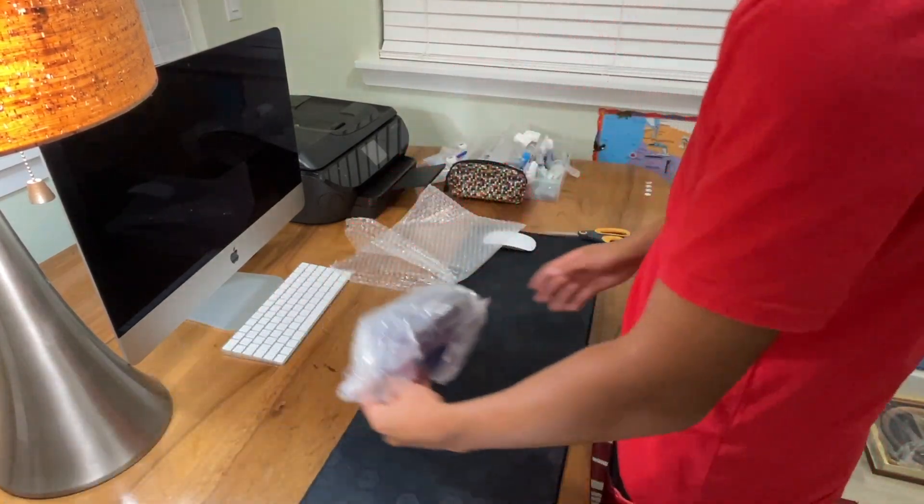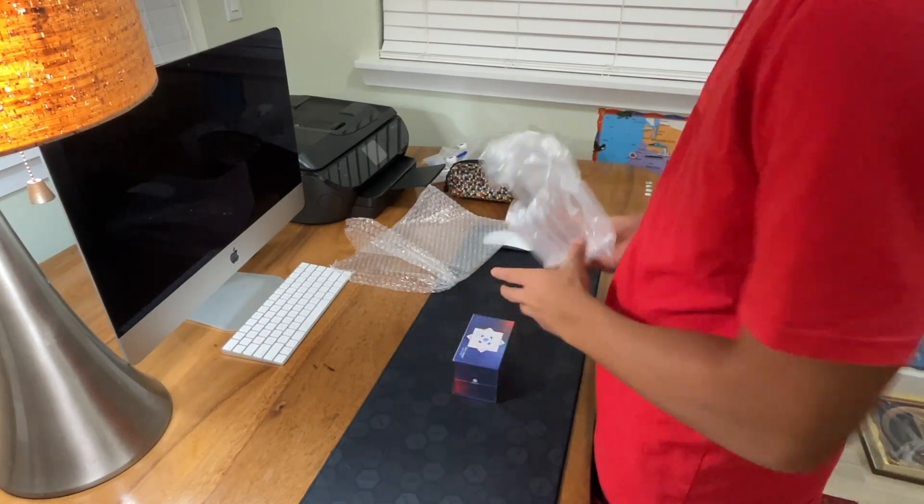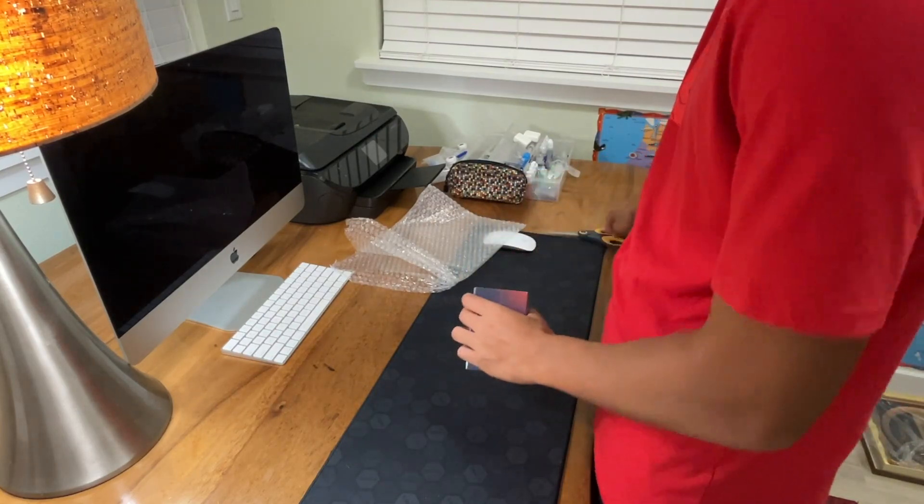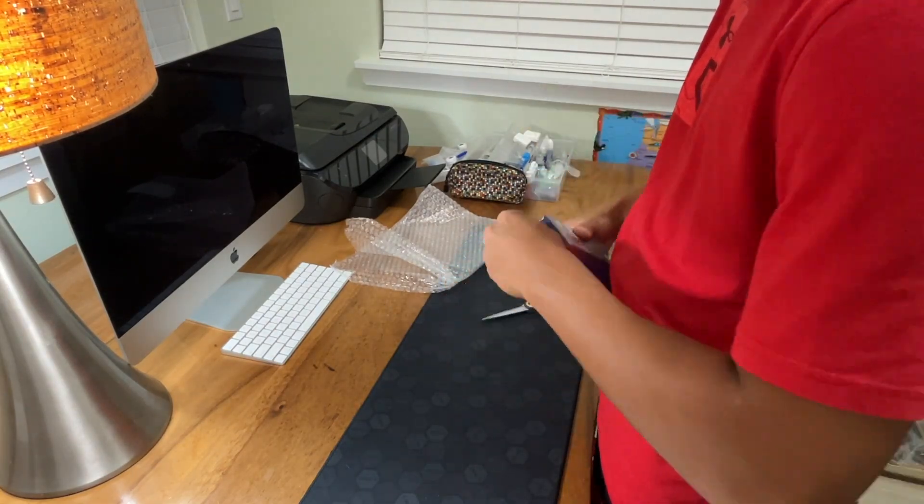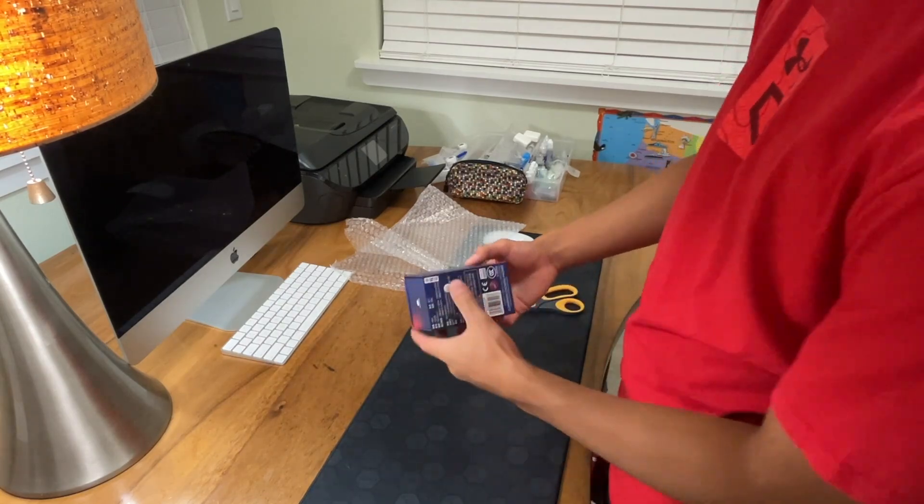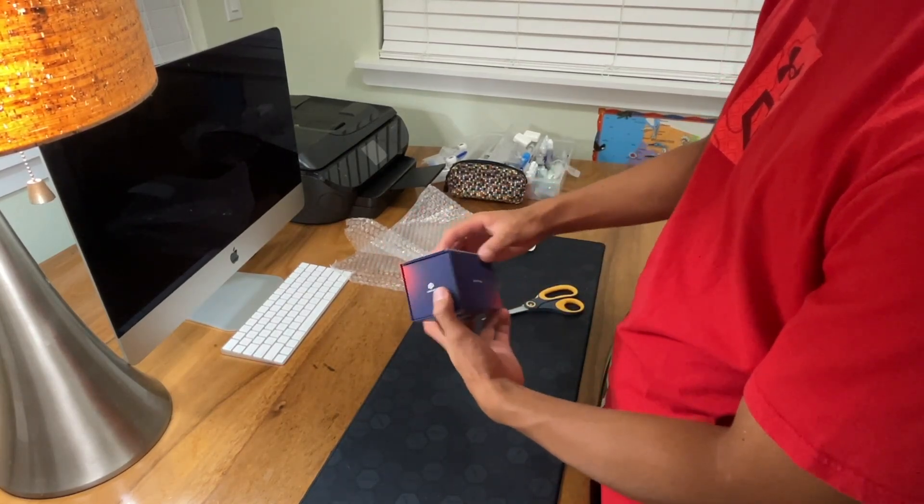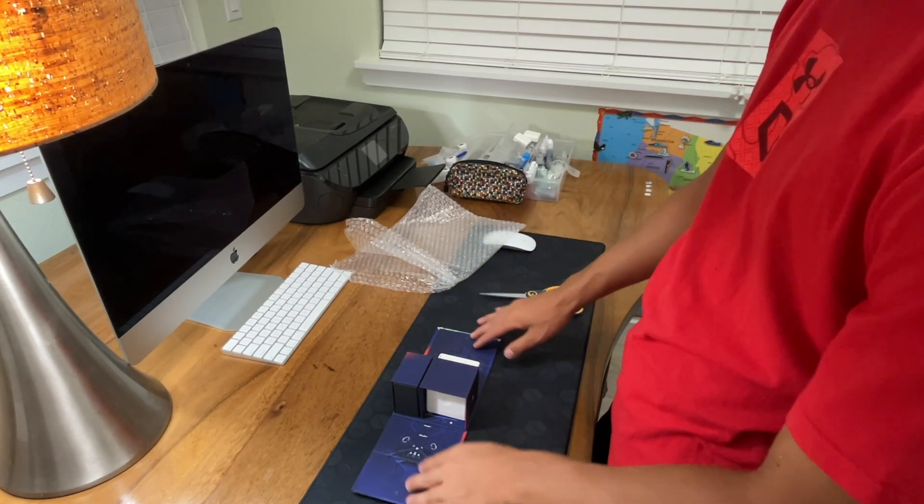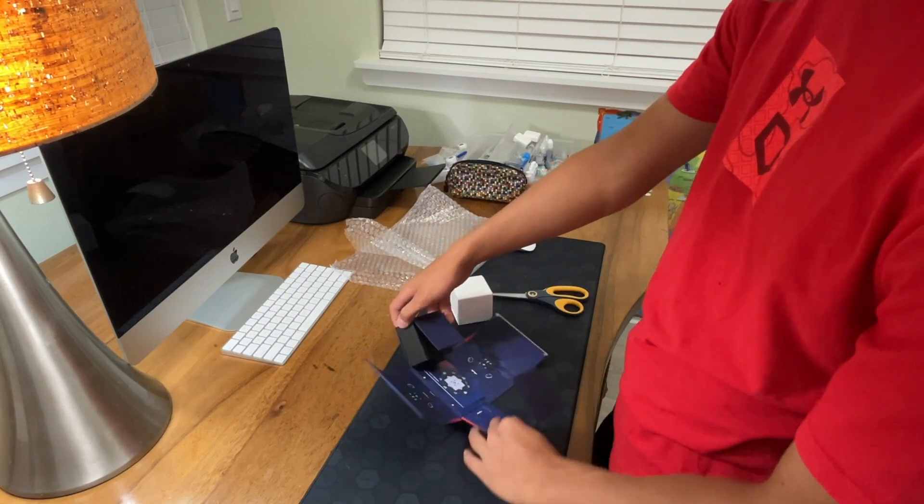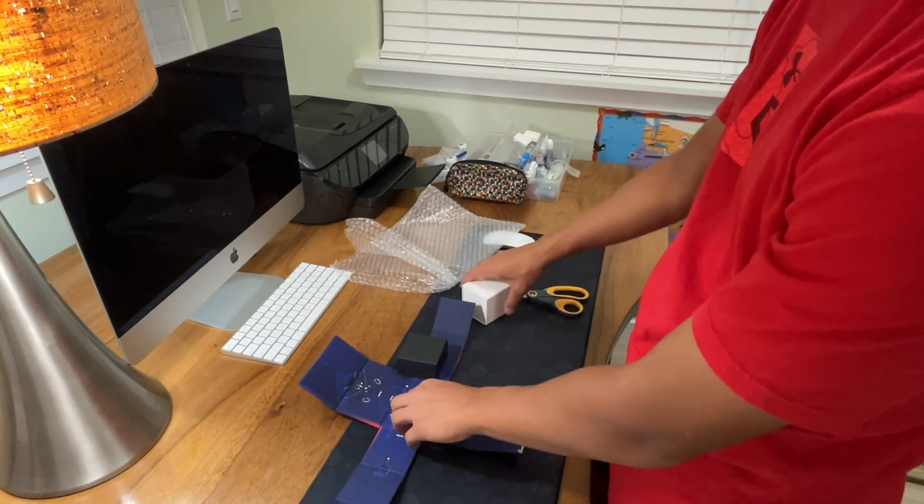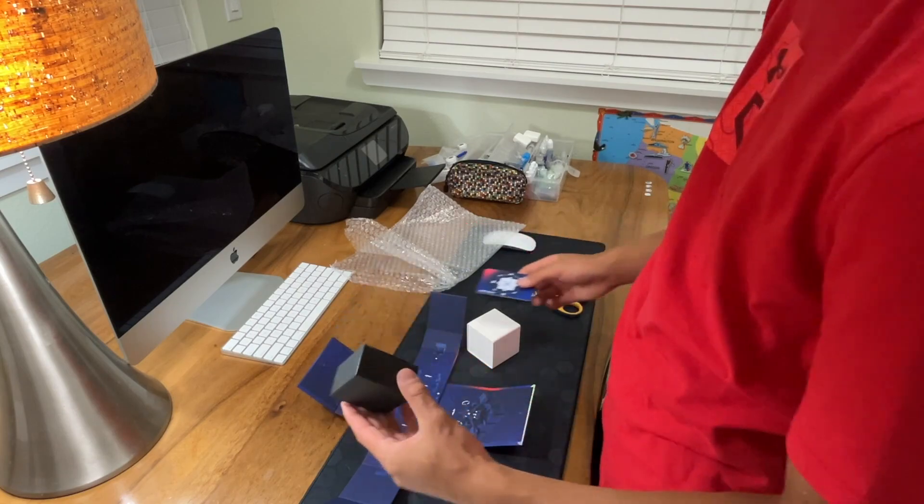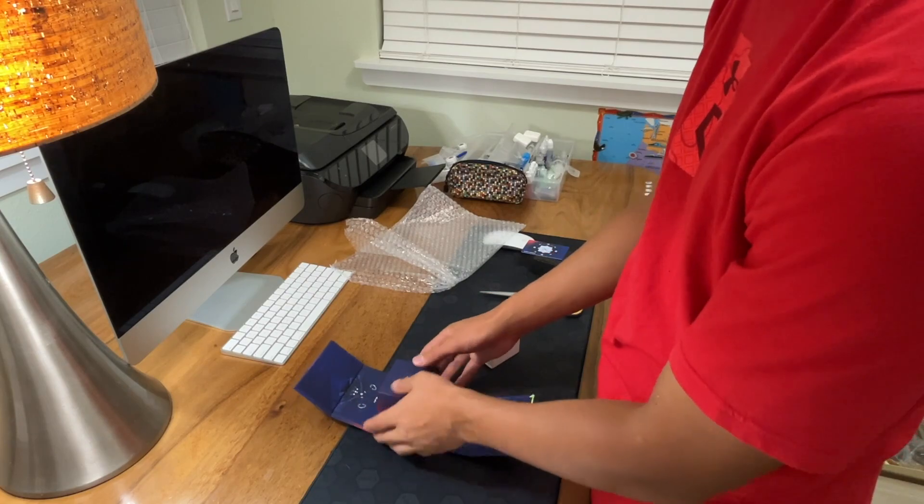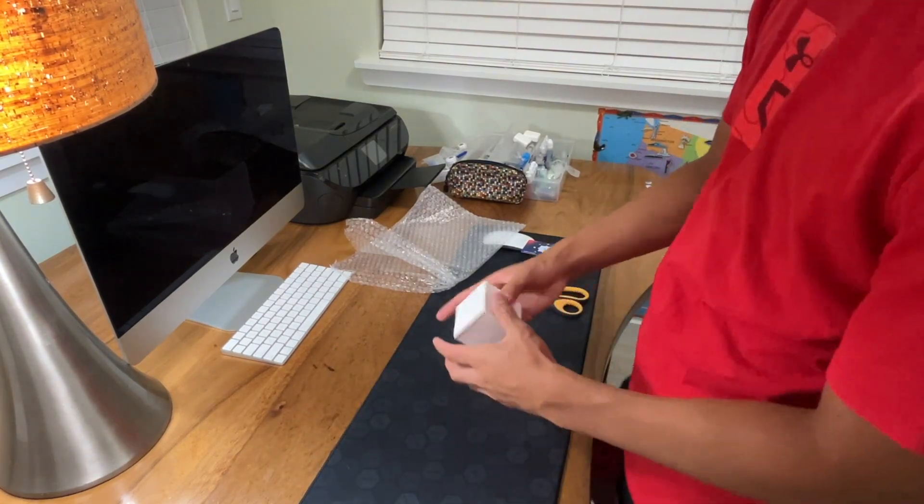Alright, so now the main event, the GAN 13. Very nice packaging here. Let's get it open. So, let me open it like this. Got the mechanism here. Got the cube and the card and accessories. So let's just get into the cube.